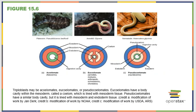Triploblasts can be acoelomates, eucoelomates, or pseudocoelomates. Eucoelomates, or true coelomates, have a body cavity within that middle layer called a coelom that is lined with mesodermal tissue, so it can develop with advanced functions. Pseudocoelomates have a similar body cavity, but it's lined with endodermal tissue from the inside of the animal and doesn't have as many specialized functions. Acoelomates don't have that special cavity at all — they tend to be solid throughout, with no specialization in the mesoderm.